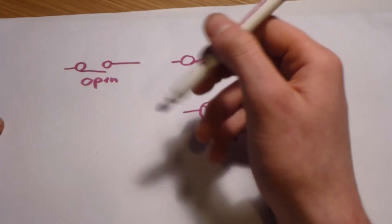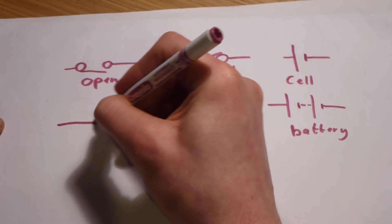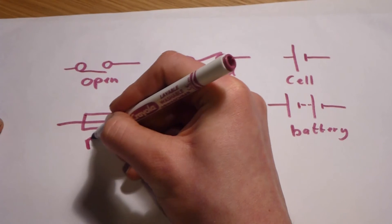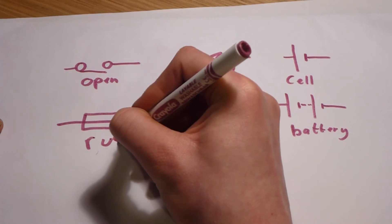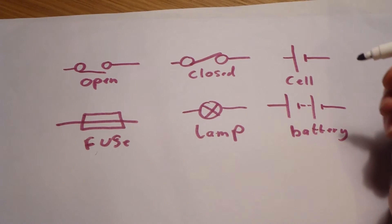After we have the lamp, we have a fuse, which is simply a wire with a box drawn around it, because that is all that a fuse is, which is designed to break if the current gets too high.